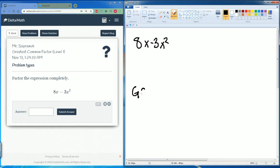The first thing we're going to expand out is 8x. 8x can be broken down into 2 times 2 times 2 times x. The term 3x squared can be broken down into 3 times x times x.